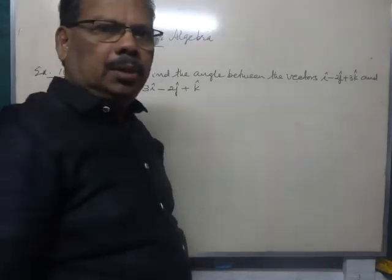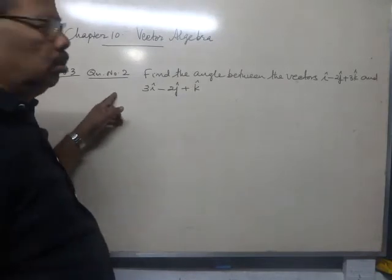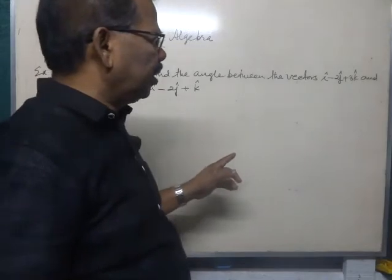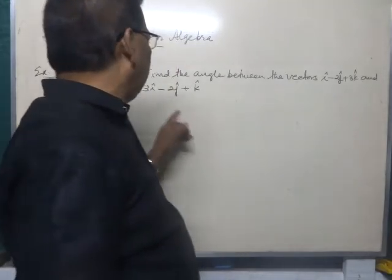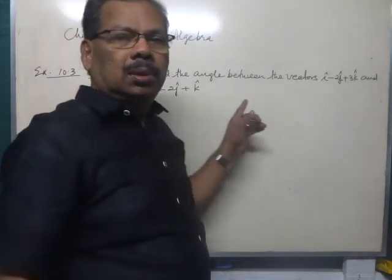Now let us continue vector algebra. From exercise 10.3, question number 2, find the angle between the vectors i cap minus 2 j cap plus 3 k cap and 3 i cap minus 2 j cap plus k cap.